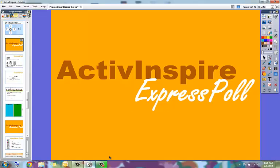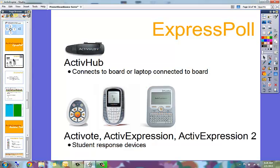This video is to show you ActiveInspire's Express Poll feature. In order to use the Express Poll, you must have an ActiveHub connected to the Promethean board or your computer or laptop that's connected to the board with registered devices. This is what the ActiveHub looks like.